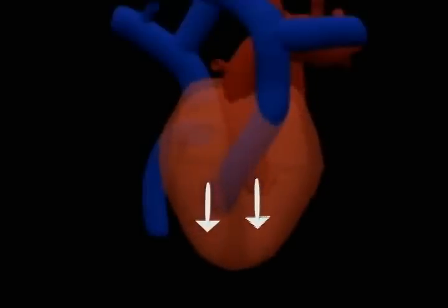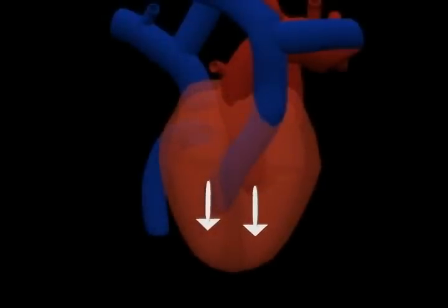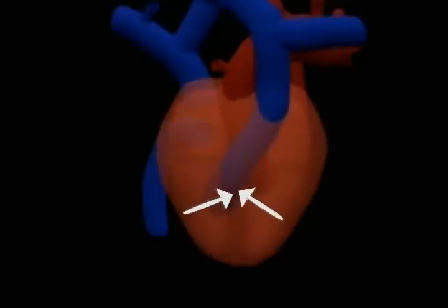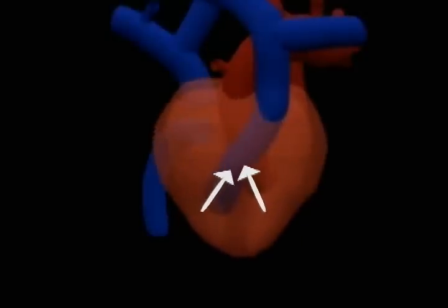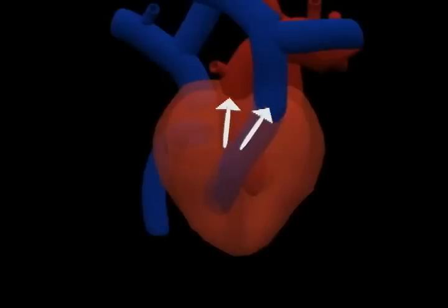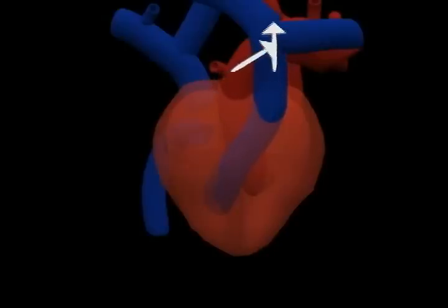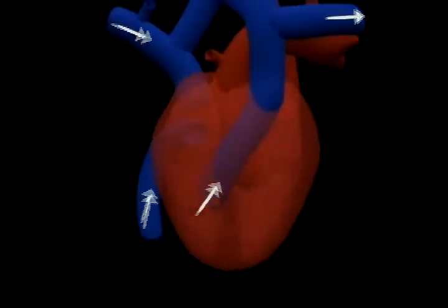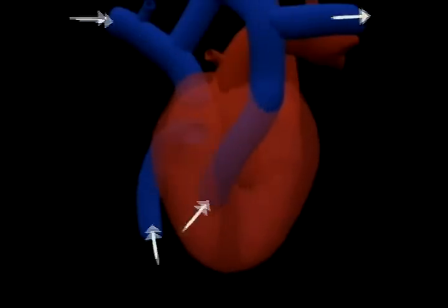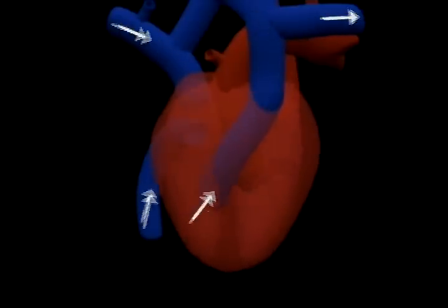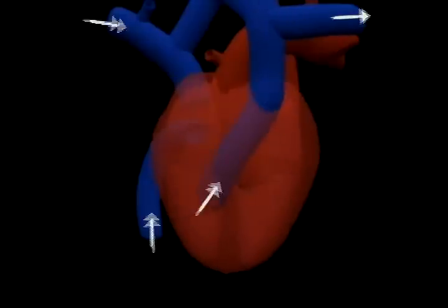Following this, the right and left ventricles contract in order to pass blood into the pulmonary artery and aorta respectively. Deoxygenated blood from the different parts of the body enters the right side of the heart and is pumped to the lungs for oxygenation.